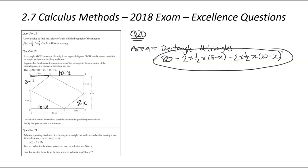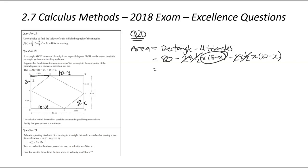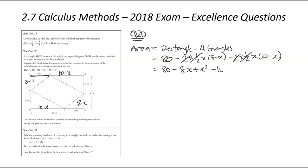So we've got a pretty unsimplified expression. The first thing to note is the two and the one-half cancel each other out on both terms, meaning we can just expand the brackets. And note that it is negative x on both — don't forget about that. So we've got 80 minus 8x plus x squared minus 10x plus x squared. That gives us 2x squared, then minus 18x, and then plus 80.